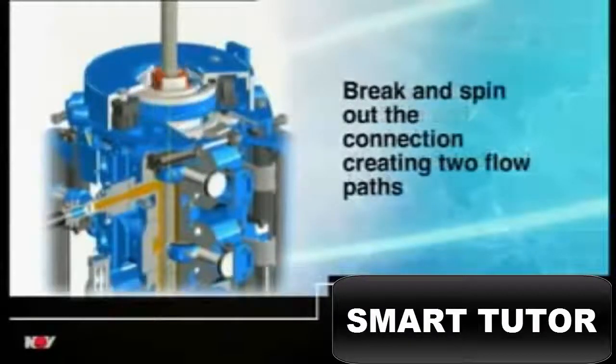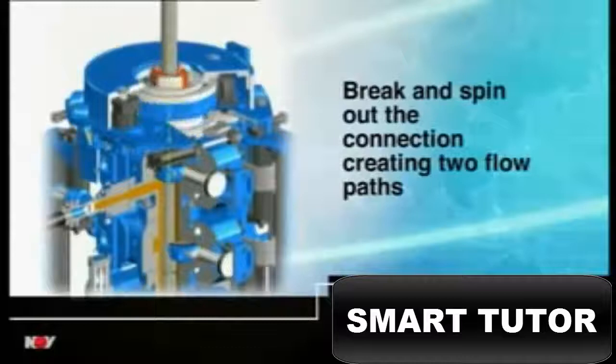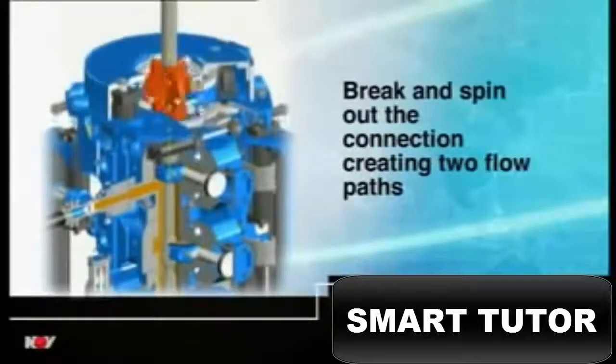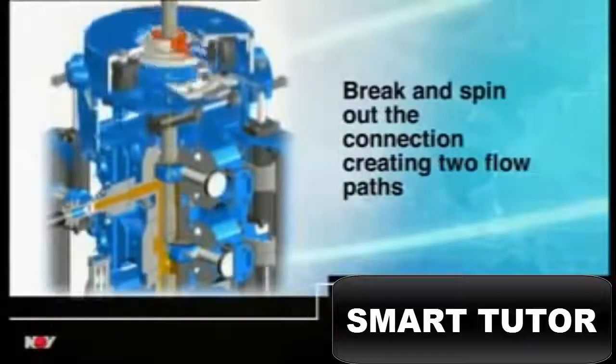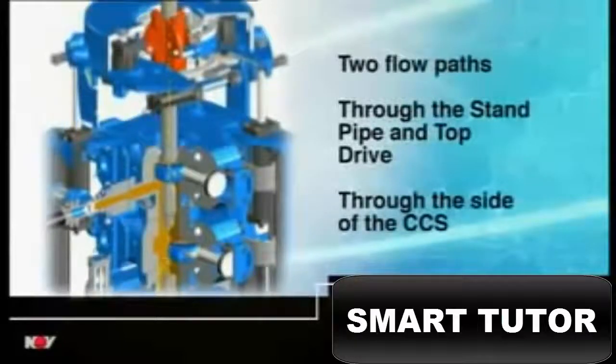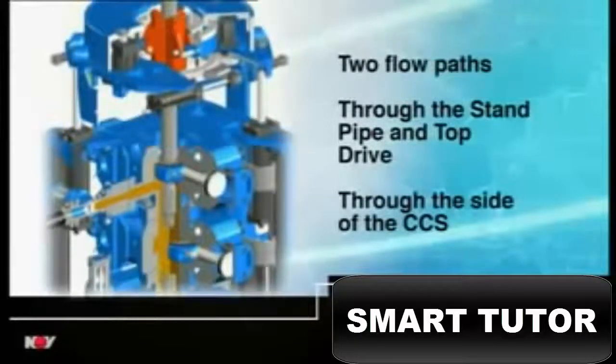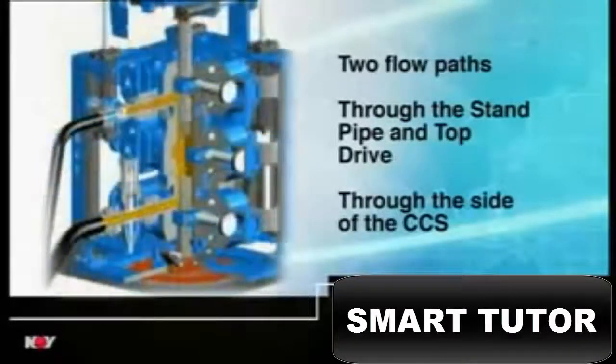With the connection separated, there are two flow paths for the circulating drilling fluid into the open tall joint box, one via the stand pipe and top drive, the other through the side from the diverter manifold.